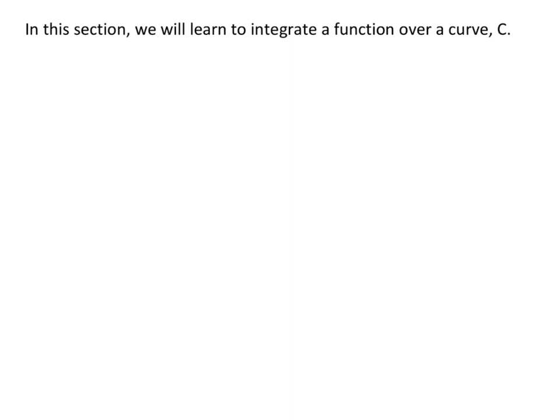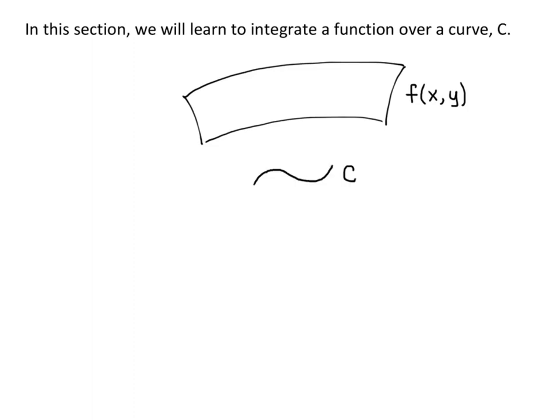Here's a geometric interpretation of what we're doing. Say we have some function f of x, y — a three-dimensional function because it's z equals some function of x and y — and then we also have some two-dimensional curve C. We want to integrate f(x, y) over the curve C. Just like when we integrate a two-dimensional function over the x-axis, we're going to be finding the area of the wall — in this case a curved wall — created by going along the curve C and then going up to the function, so the height of that wall at each point is determined by f(x, y).